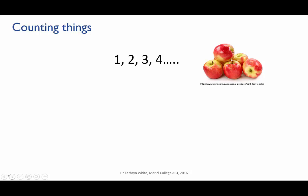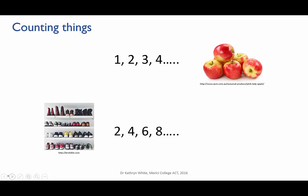Sometimes it's convenient to skip count. For instance, shoes usually come in pairs, so if you have a lot of shoes to count you would count by twos: 2, 4, 6, 8. Rather than saying there are 40 shoes in this picture, you could say there are 20 pairs.